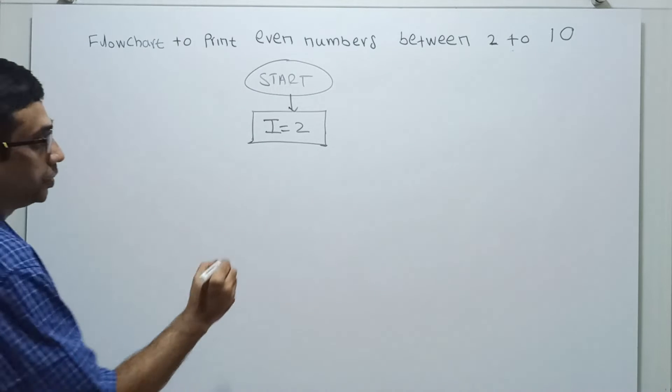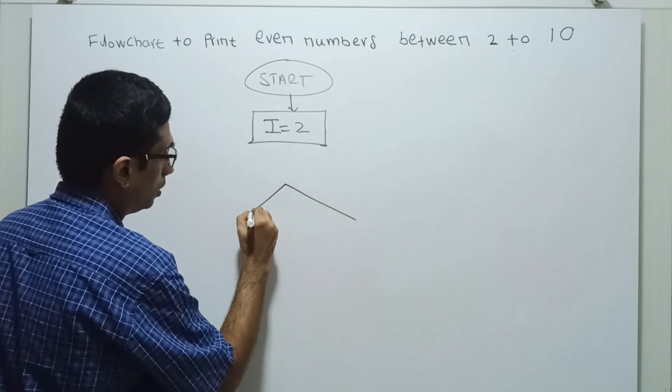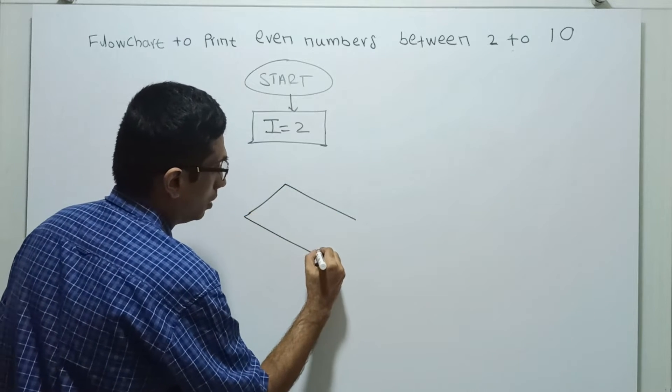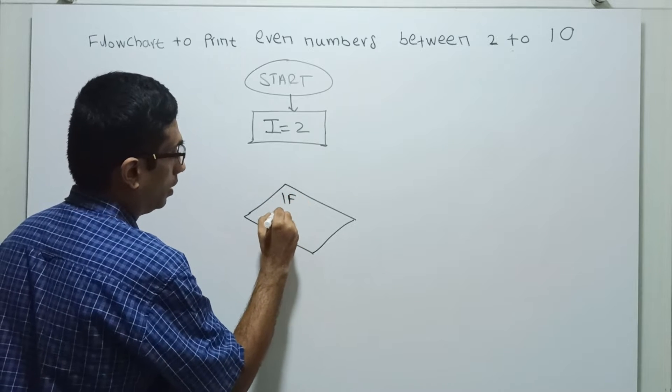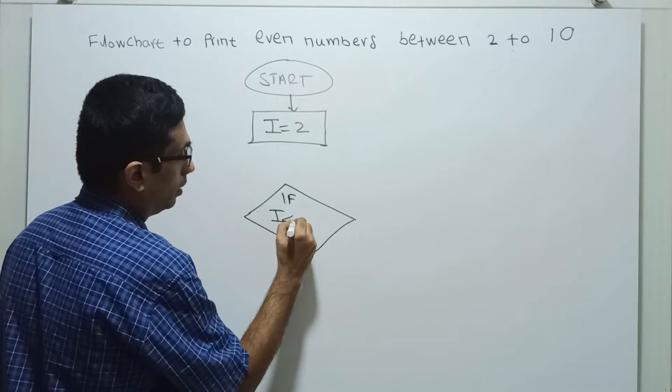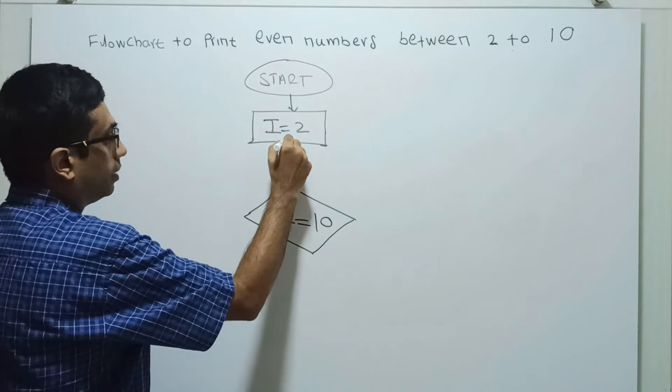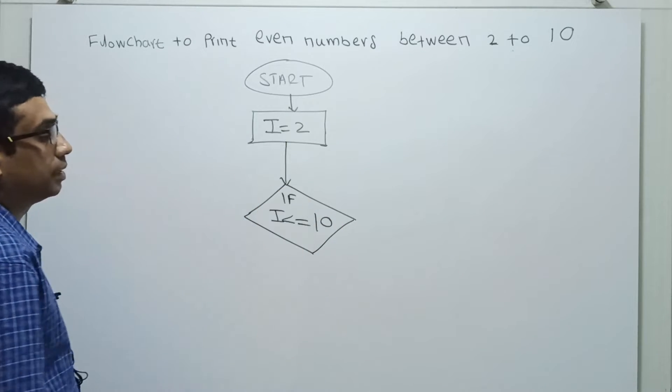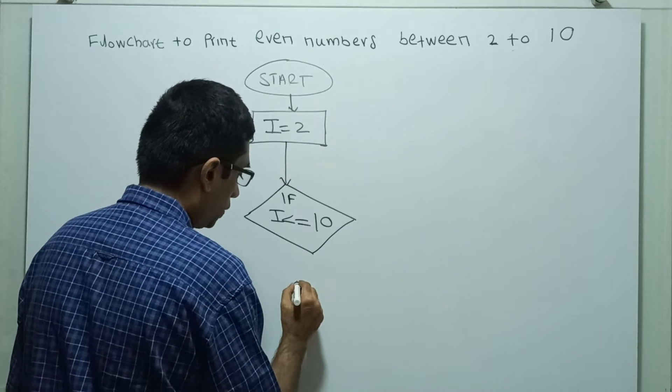Now I am checking a condition: if i less than or equal to 10. So i less than or equal to 10, what I am doing?